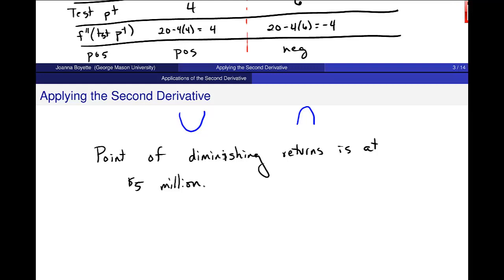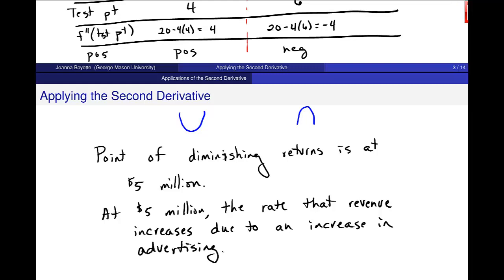So at this $5 million point, the rate that revenue increases due to an increase in advertising investment, or expenditure, starts to slow.